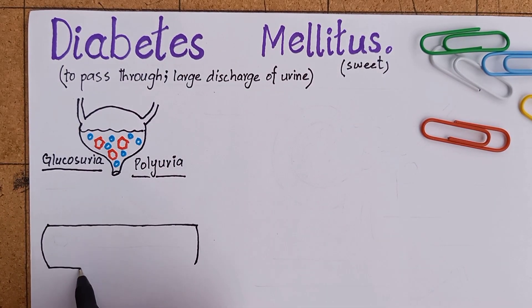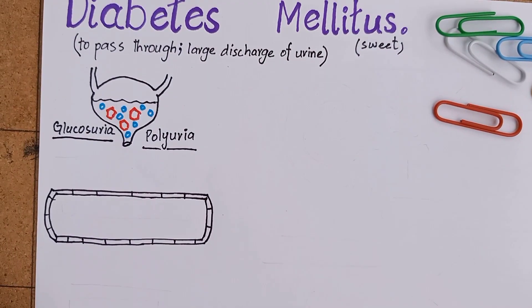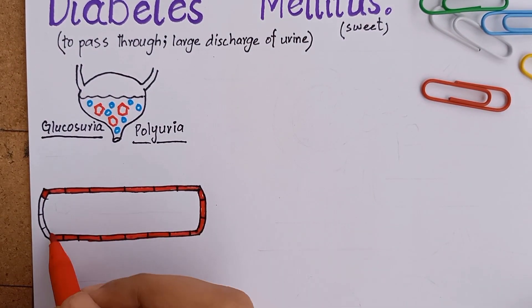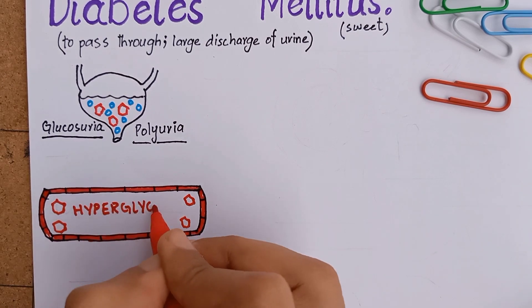By definition, diabetes mellitus is a group of metabolic disorders sharing the common feature of hyperglycemia.